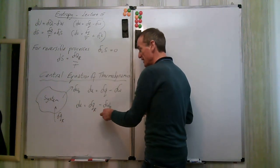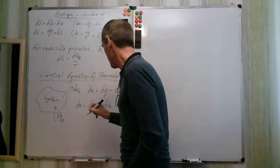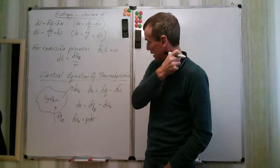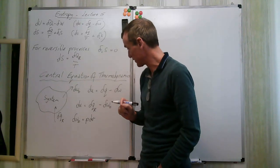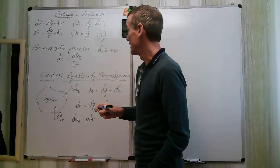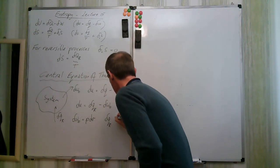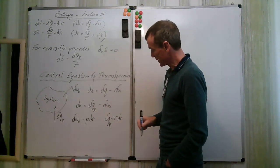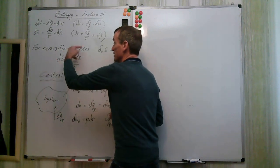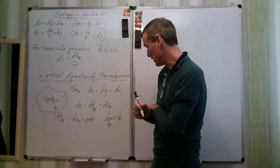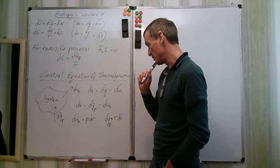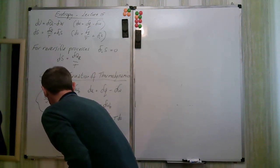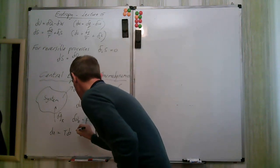We have relationships for delta q_r and delta w_d. We know that delta w_d = p dv — that's our displacement work, pressure times a small increment of specific volume. And delta q_r equals T ds. So substituting in, we get du = T ds minus p dv.